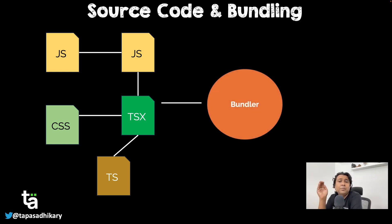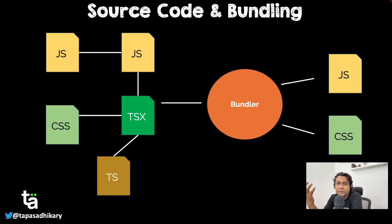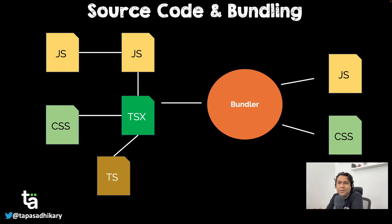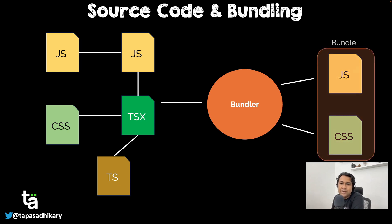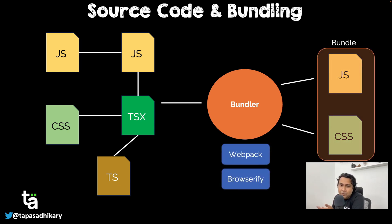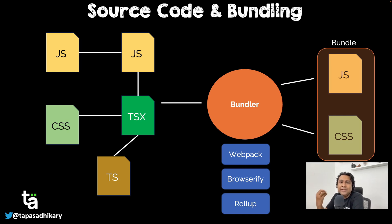That's where we have something called a bundler. What does a bundler do? The bundler bundles all your JavaScript and CSS together and produces a combined output — a combined JavaScript file and a combined CSS file. That combined JavaScript, CSS, or HTML file is what gets loaded on the browser, and that's where customers start interacting with your application. Popular bundlers you would have heard of include Webpack, Browserify, Rollup, and Parcel — these are very popular tools that help you create a bundle which gets shipped and runs on the browser.